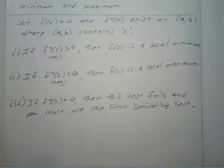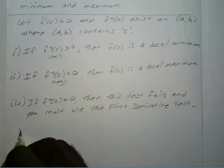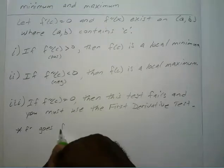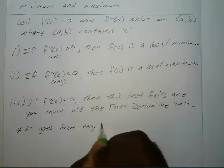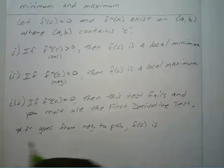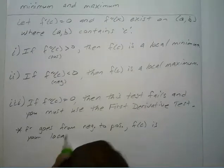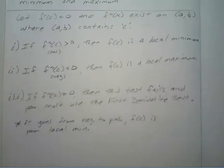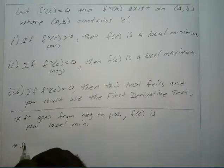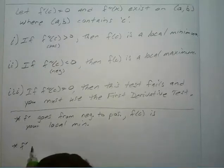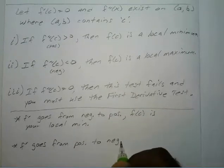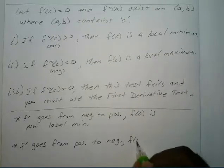Just in case you forgot what the first derivative test is, here's a quick little recap. If your first derivative goes from negative to positive, then your function at c is your local minimum. And if your first derivative goes from positive to negative, then your function at c is the local maximum.